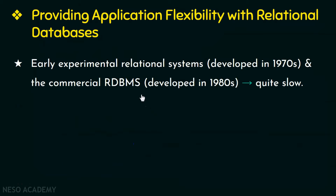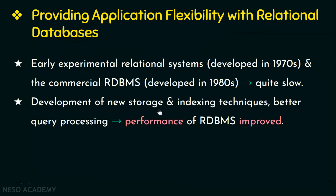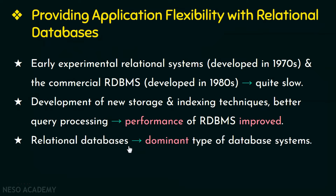The performance of the early experimental relational systems developed in the 1970s, and also the commercial RDBMS developed in the 1980s, were quite slow since they didn't use proper search techniques. But with the introduction of new storage and indexing techniques and better query processing, the performance of RDBMS improved gradually.